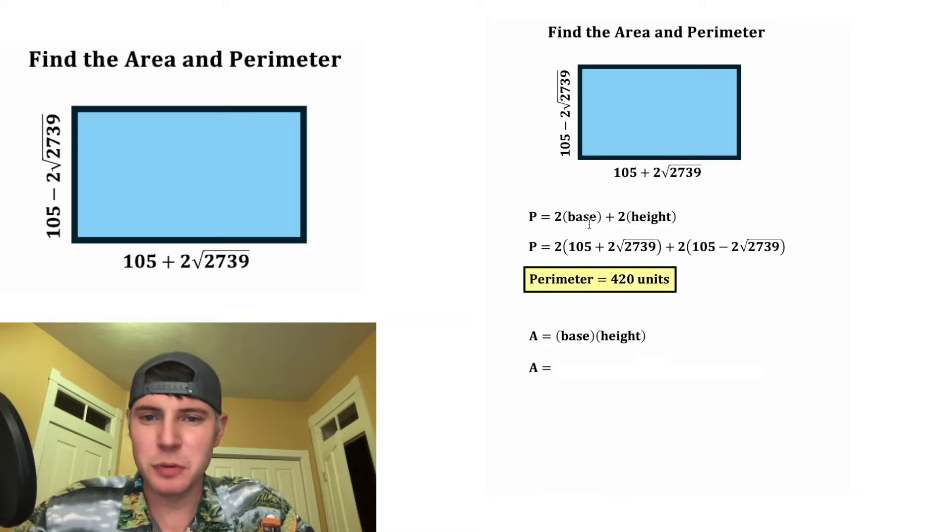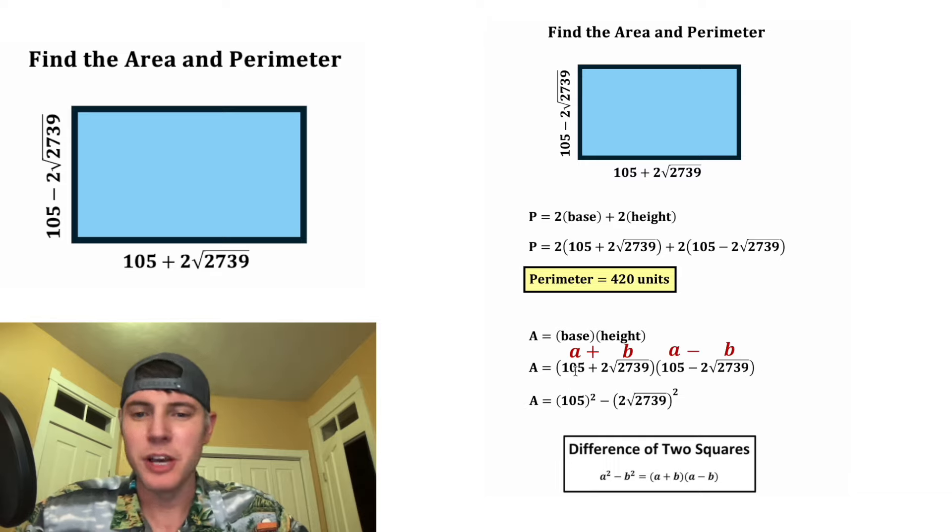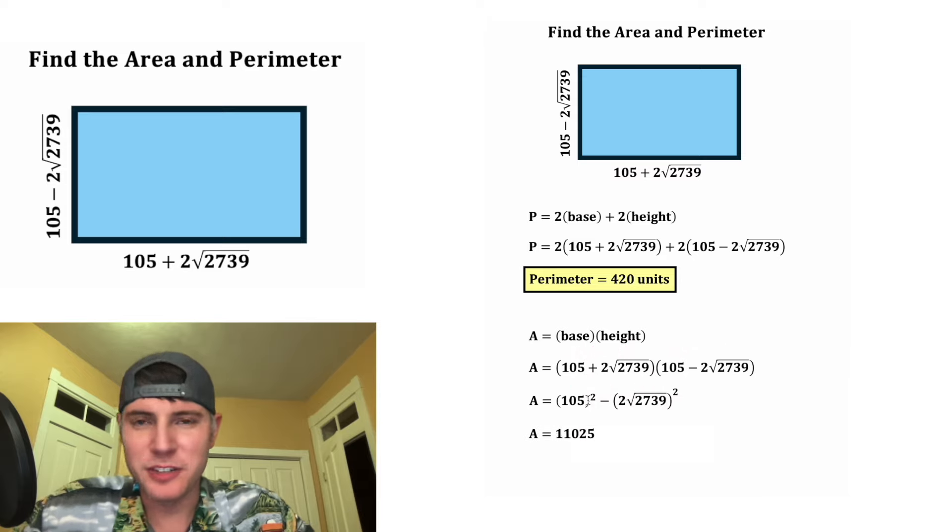Next we can find the area. In the place of the base, let's plug in this number. In the place of the height, let's plug in this number. For this we can use the notes for the difference of two squares: (a+b)(a-b) = a² - b².